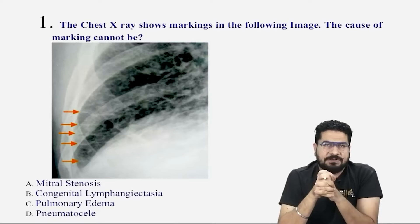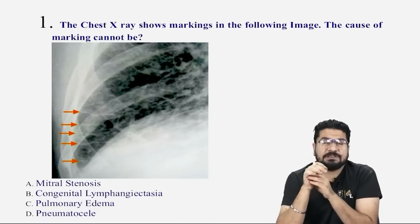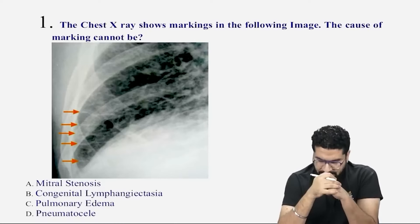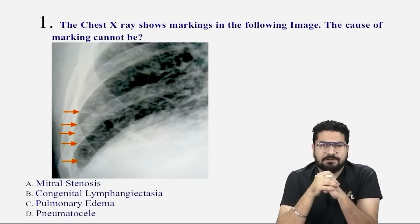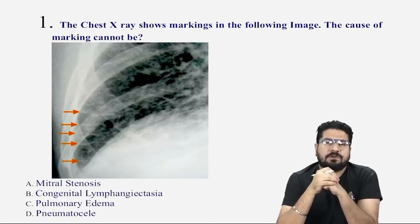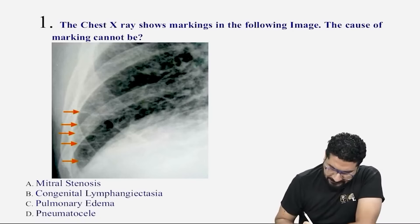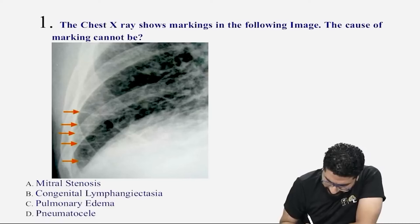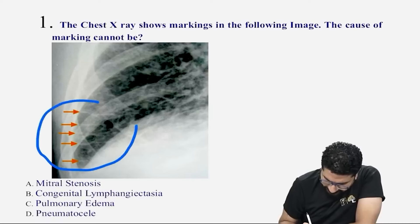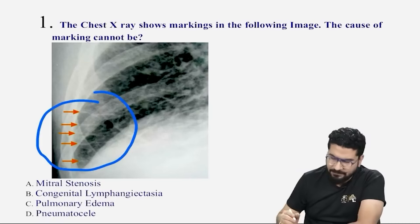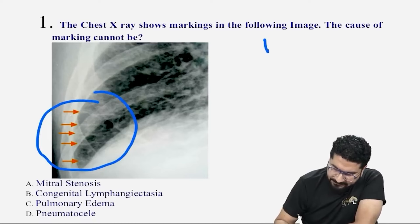Hey guys, this is Dr. Aman Sethia. We'll discuss some high-yield questions. Let us start with the first question: a chest X-ray shows markings in the following image. What these markings are called — these are perpendicular markings, and we call them Kerley B lines.